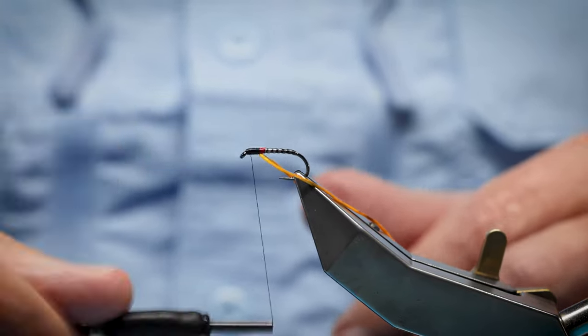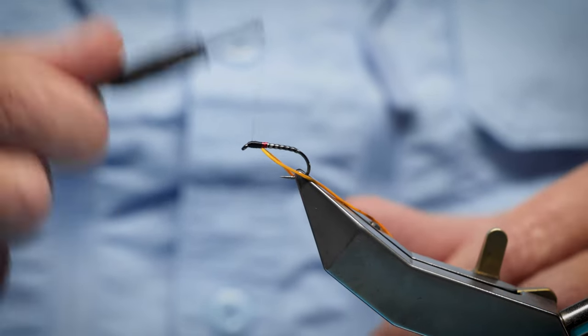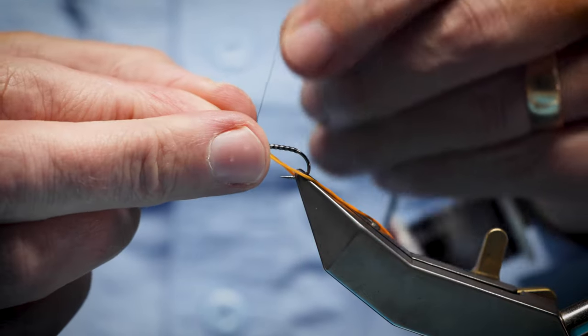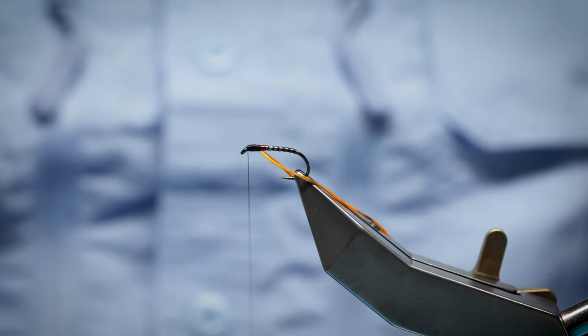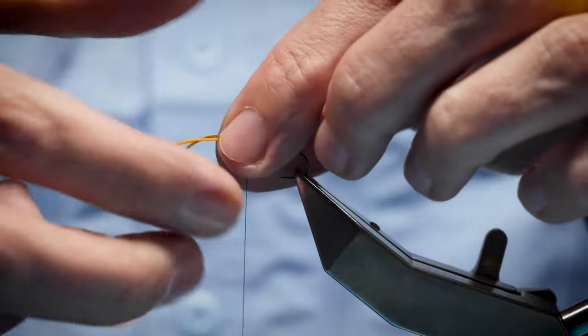Now this UTC is a springy type thread, so I always like to put a half hitch just to stop it. If I let it go or bump the thread, it's not going to spring off, so that you can position your – these are your wing buds.